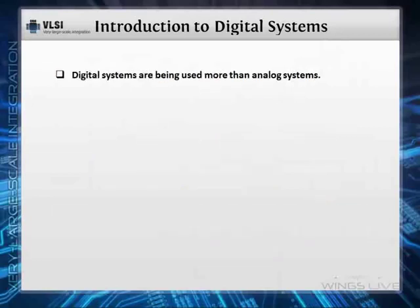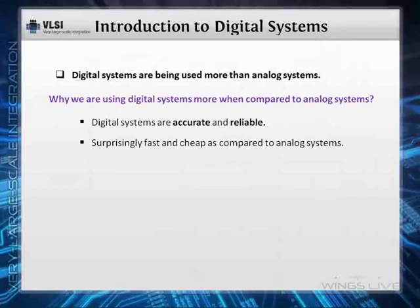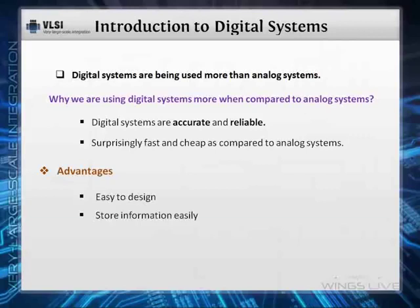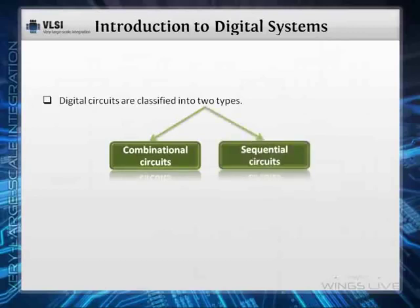Digital systems are being used more than analog systems because they are accurate and reliable, and surprisingly fast and cheap compared to analog systems. Some advantages of digital circuits frequently used in digital products: they are easy to design, they can store information easily, they are less affected by noise, and more digital circuits are fabricated on IC chips. Digital circuits are classified into two types — combinational circuits and sequential circuits — which we will discuss along with logic gates in detail in upcoming tutorials.